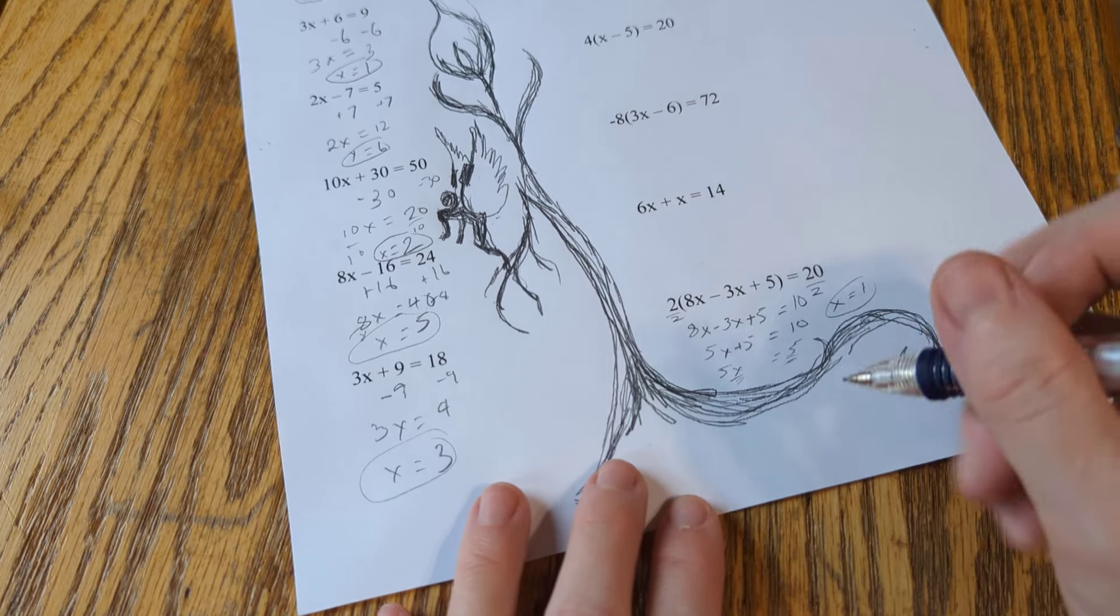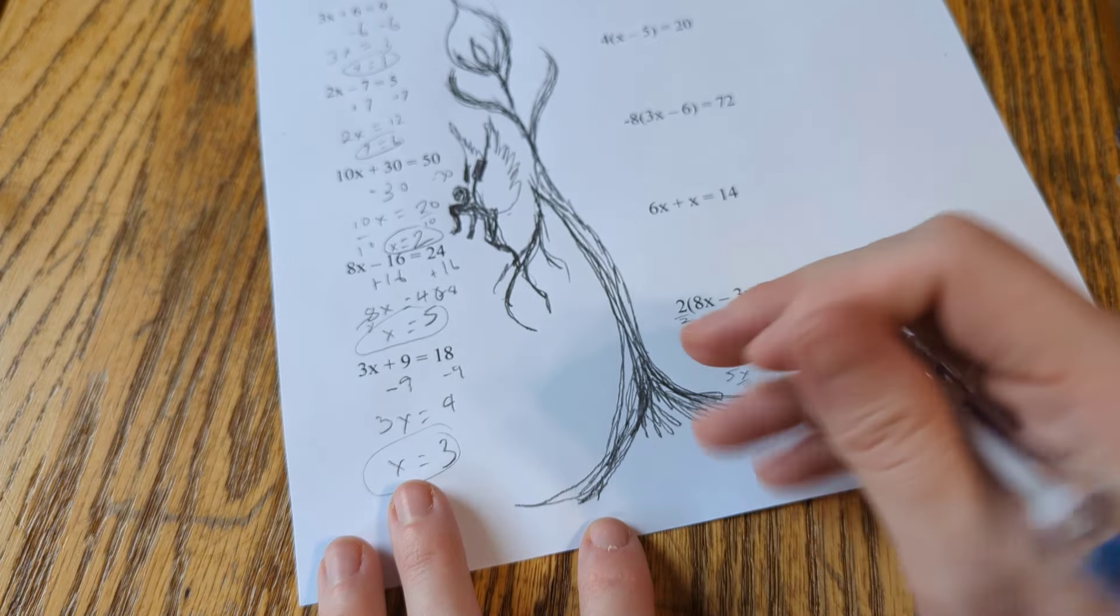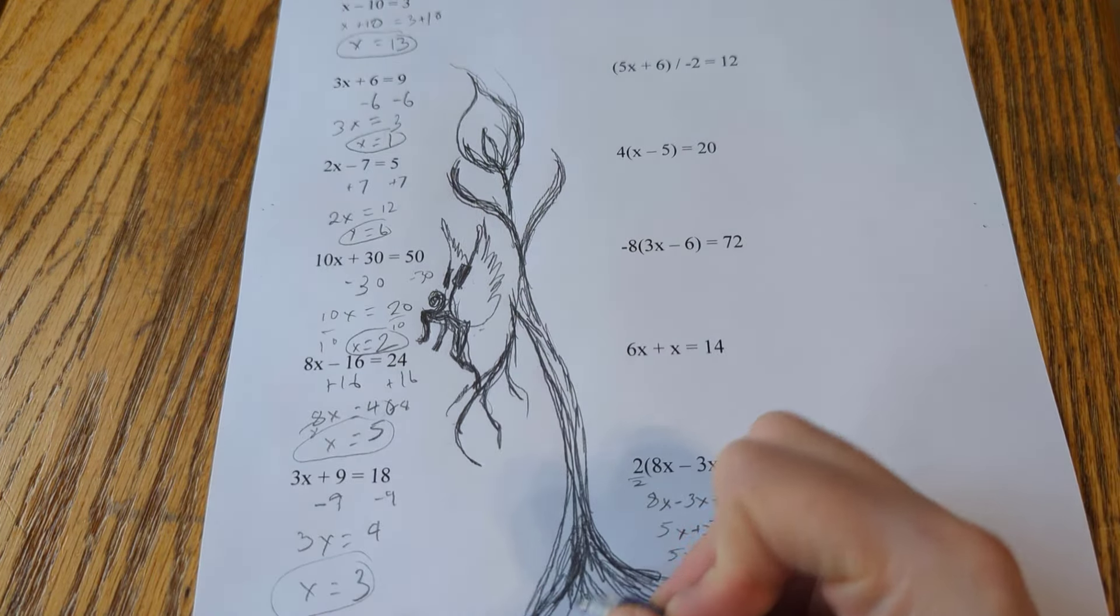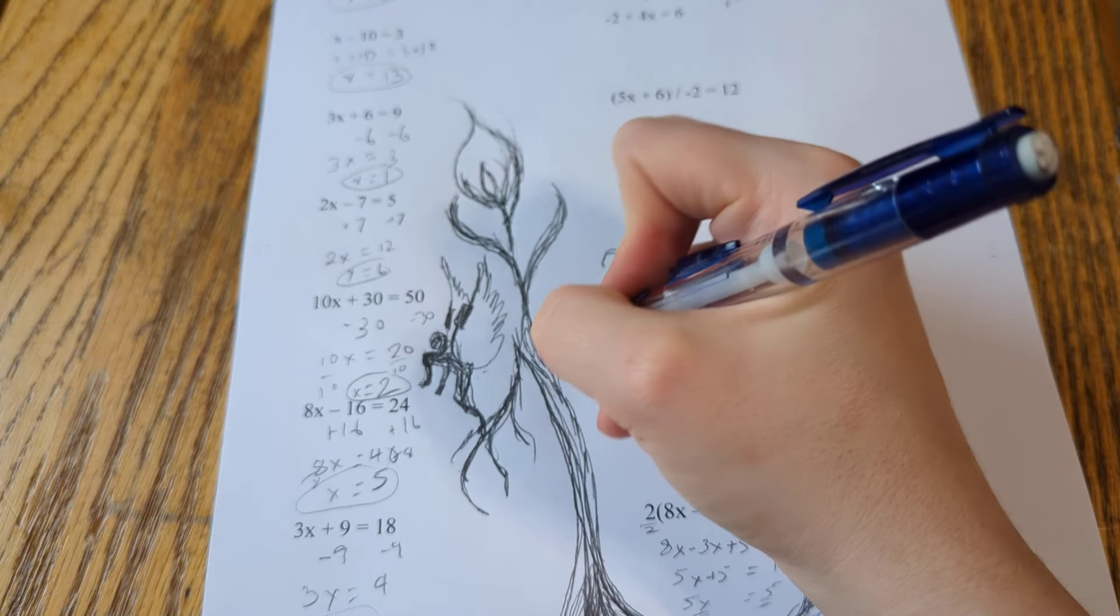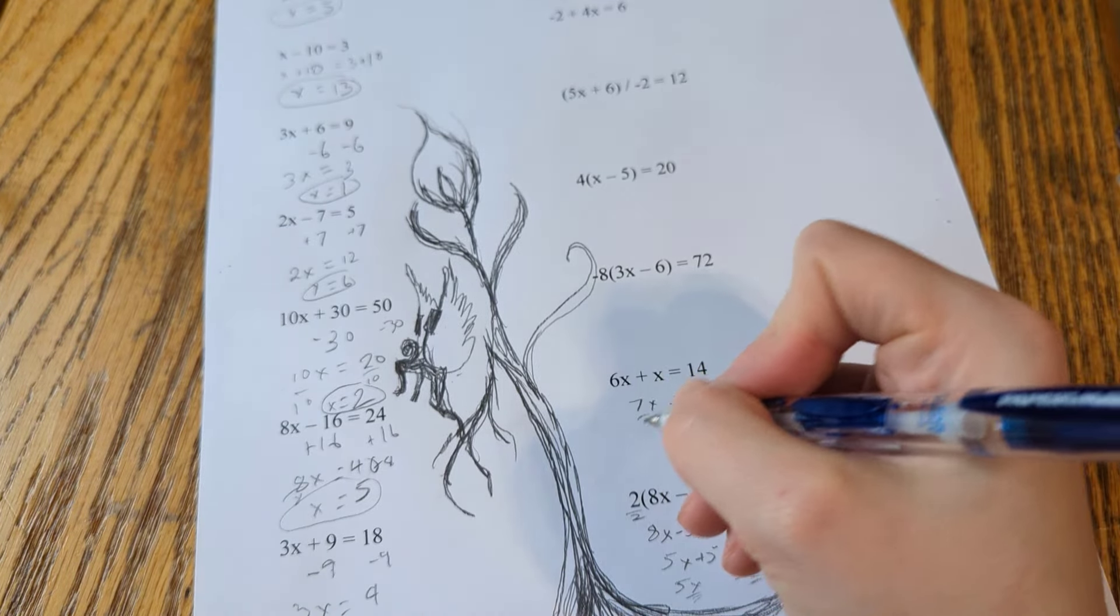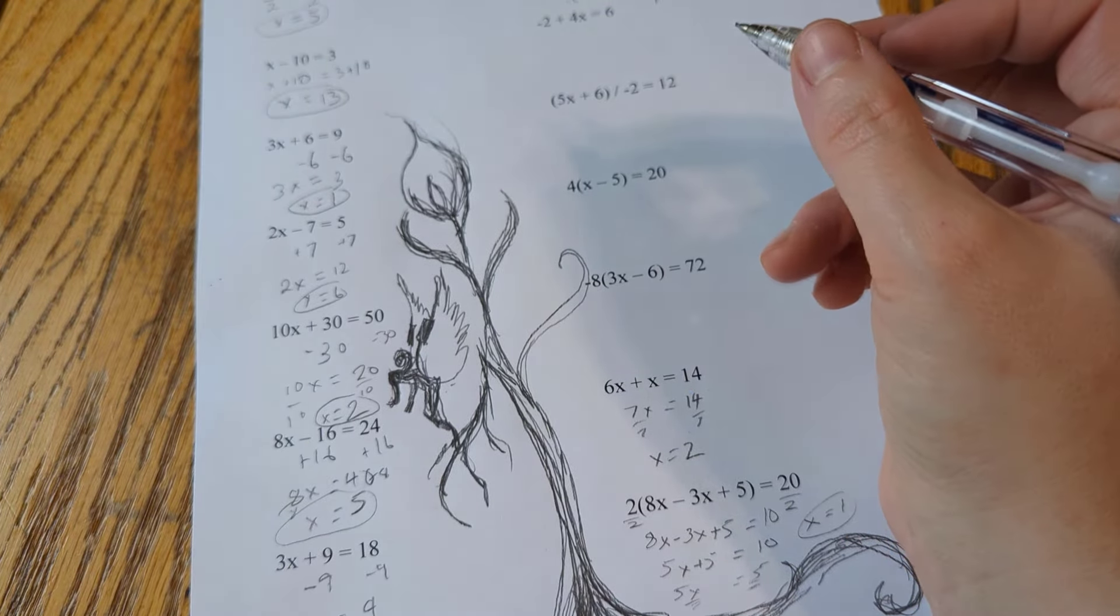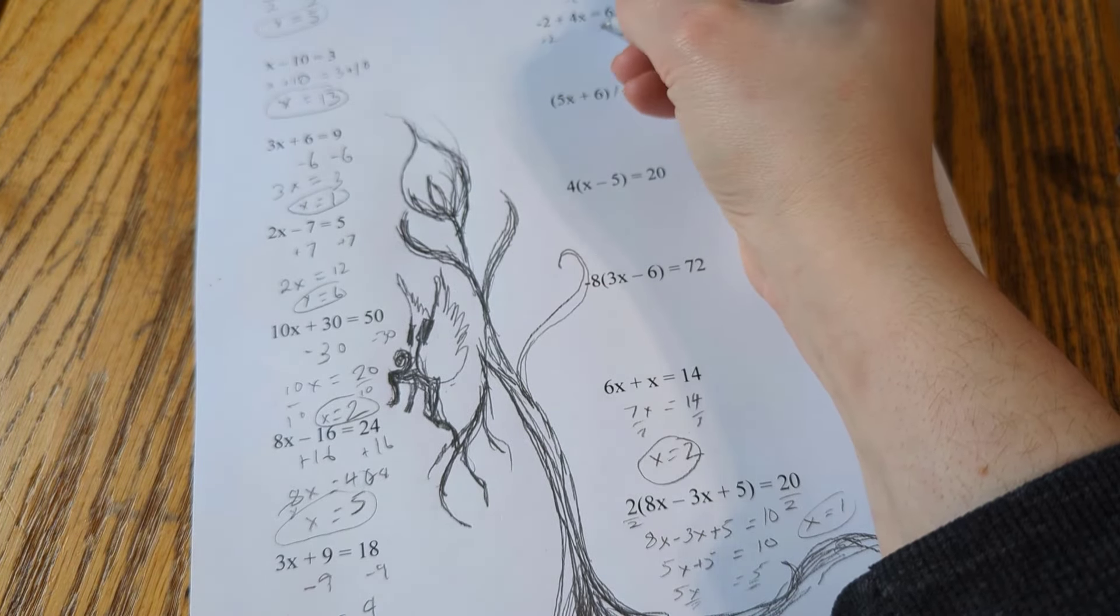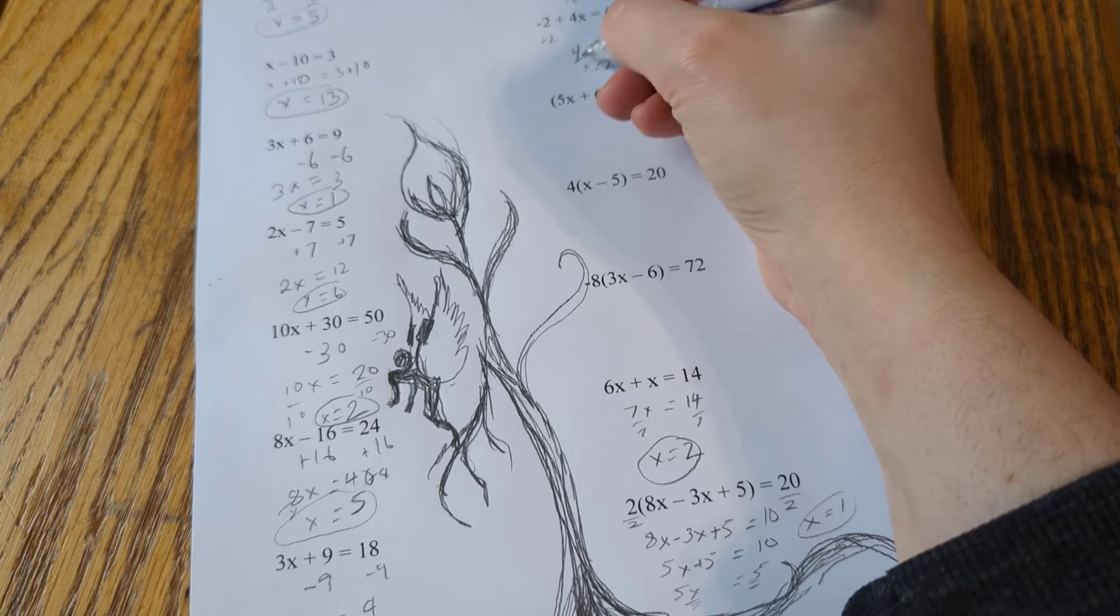All right, go ahead and do the next one. Everybody feeling good? It's just the same stuff we're doing, just different numbers. We're going to add 16, correct, to both sides, which is going to give us 8x equals 40. Yep. And then we divide by 8. And we get x equals 5. Great job, guys. Next one.